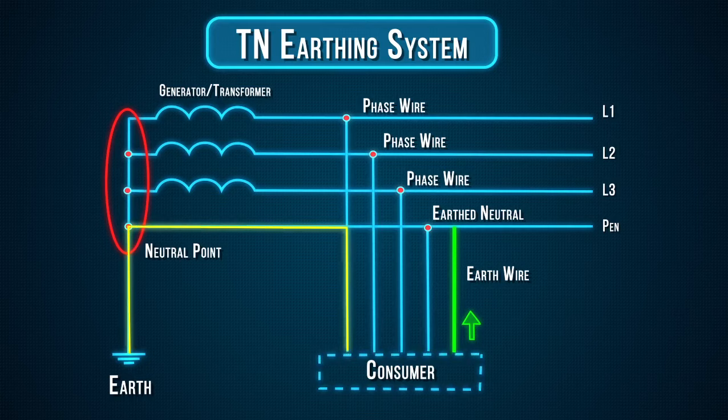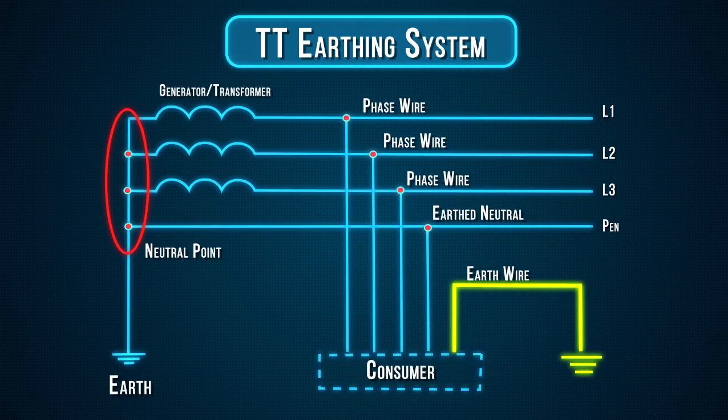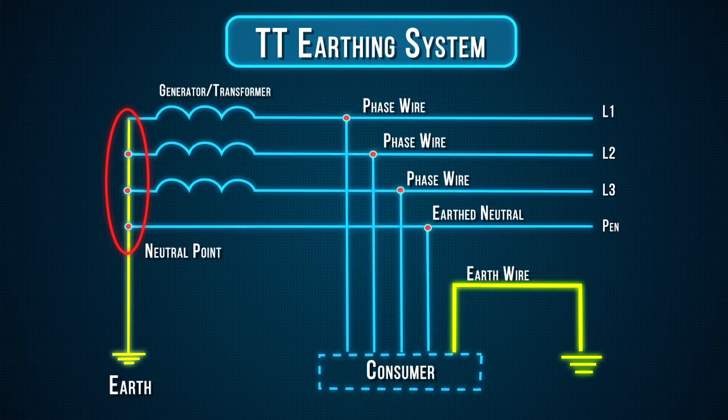In a TT earthing system, the protective earth connection for the consumer is provided by a local earth electrode, and there is another independently installed at the generator. There is no earth wire between the two. The fault loop impedance is high.